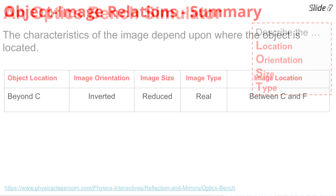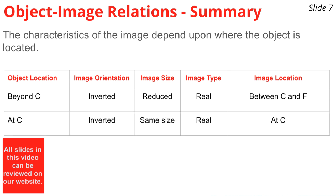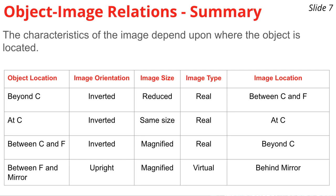The table on this slide serves as a cheat sheet showing how the LOST characteristics of images depend on object location. When the object is beyond C, the image is between C and F, inverted, reduced, and real. When the object is at C, the image is still inverted and real but the same size and at the same location. When the object is between C and F, the image is still inverted and real but magnified and located beyond C. Finally, when the object is between the focal point and the mirror, the image appears on the opposite side of the mirror — upright, magnified, and virtual.